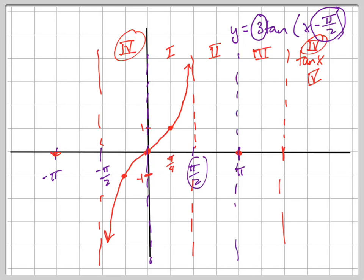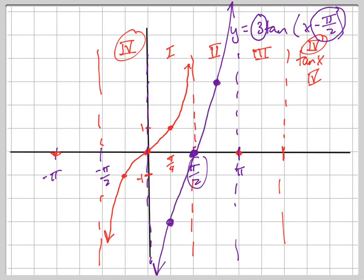All of these points shift to the right, but the ones that aren't at 0 also get stretched out. This is my center point, and instead of being at 1, that point is going to be at 3; instead of being at negative 1, that point is going to be at negative 3. So my graph looks like this — it'll be curvy; it kind of looks like a line because I'm zoomed in, but it'll be more curved — stretched out vertically.